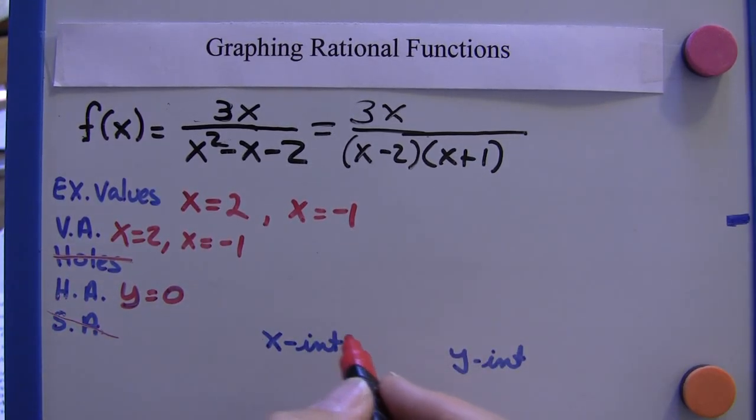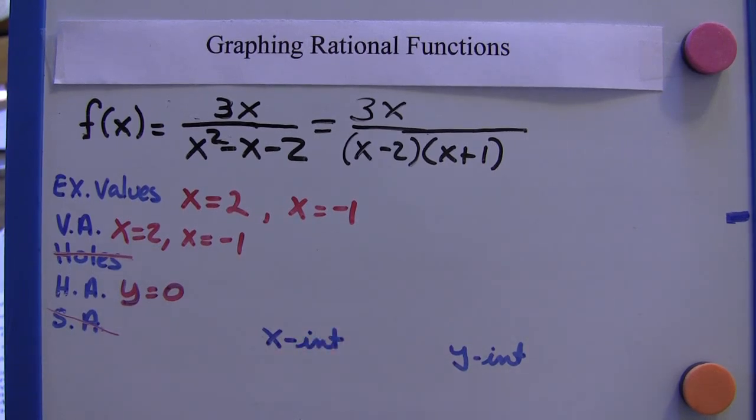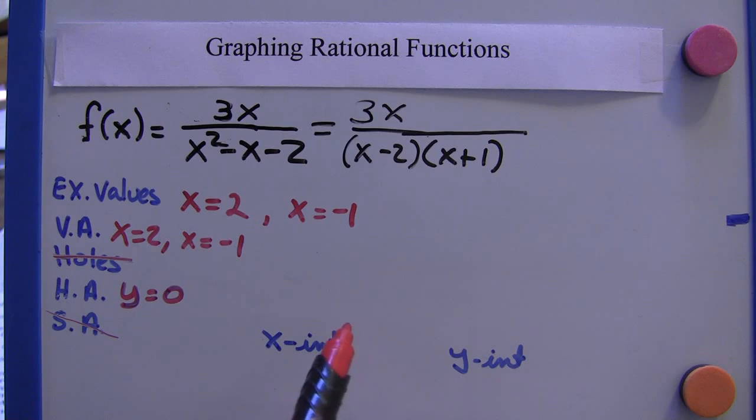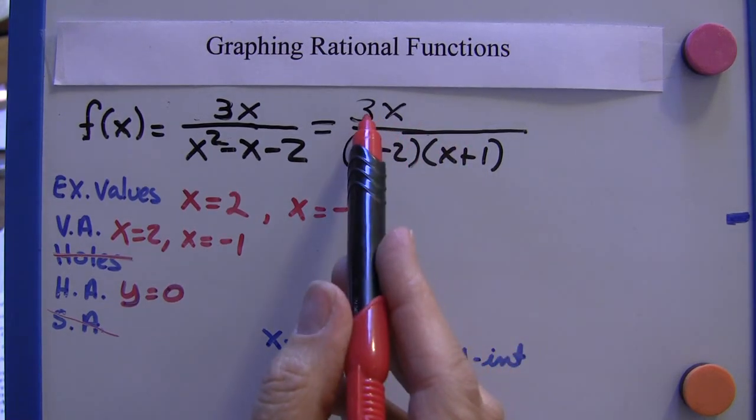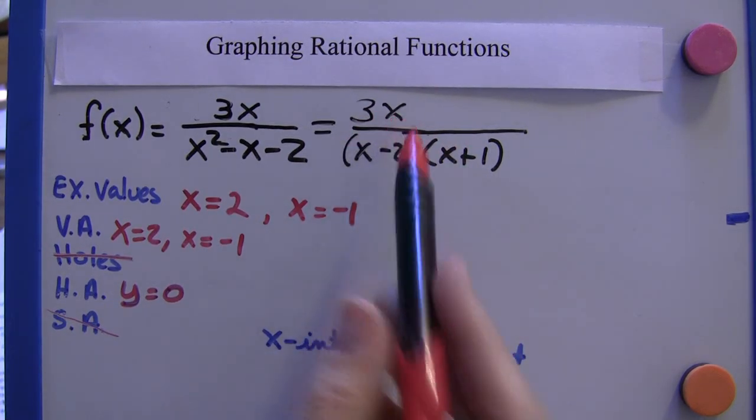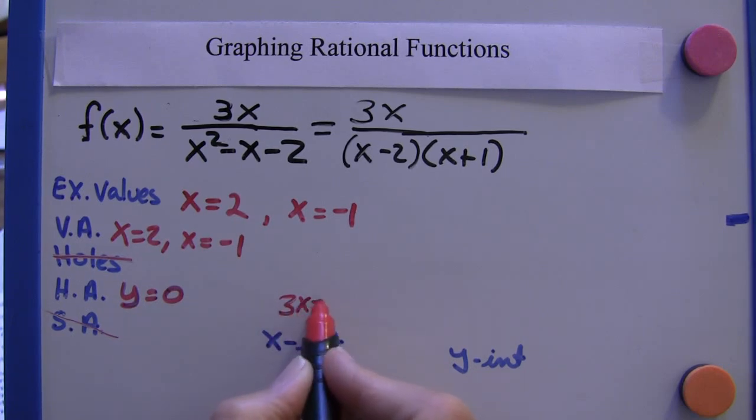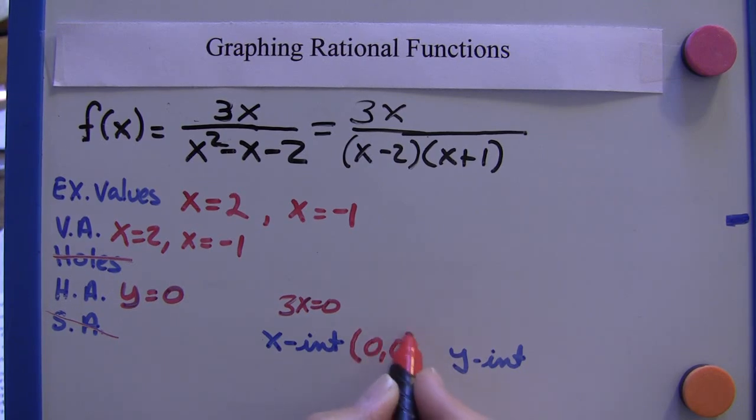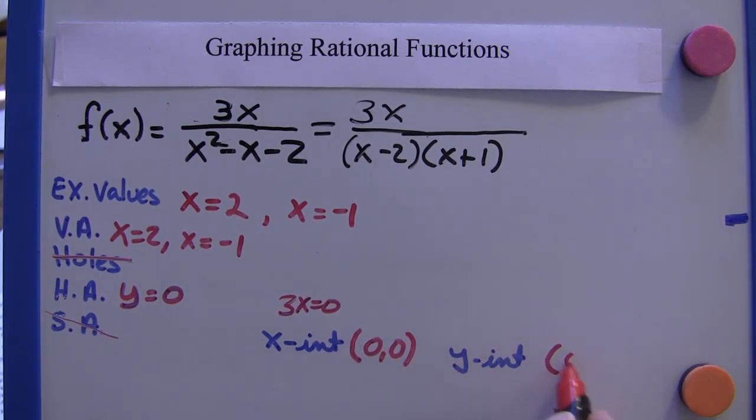And the x-intercept, we can find it by looking at a graphing calculator. We could also set the numerator equal to 0. Well, 3x equals 0, so x has to equal 0. So there's an x-intercept at 0, 0, which means there is a y-intercept at 0, 0.